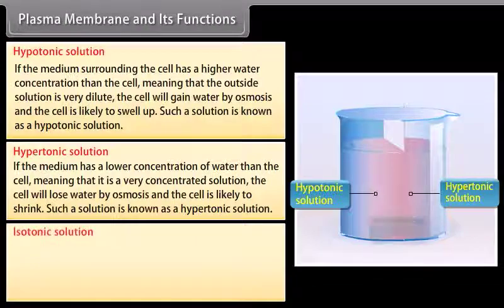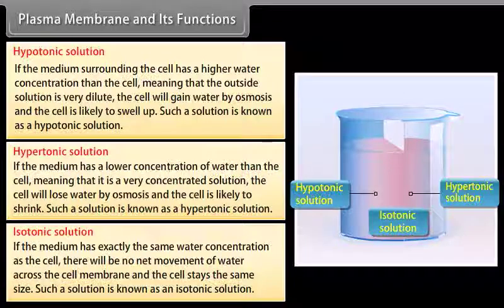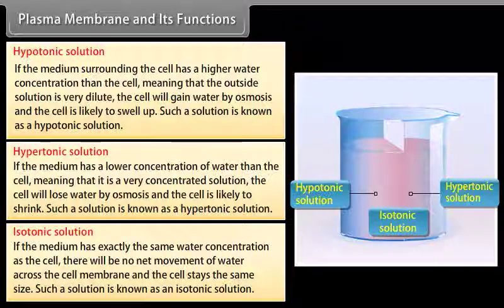Isotonic solution: if the medium has exactly the same water concentration as the cell, there will be no net movement of water across the cell membrane and the cell stays the same size. Such a solution is known as an isotonic solution.